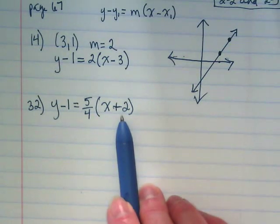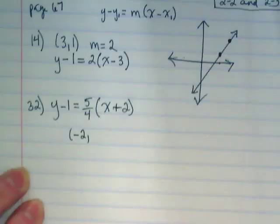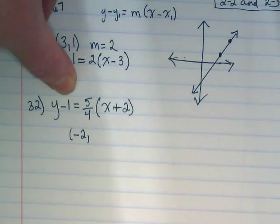And in the equation it's positive. So what does that mean about the x-y pair? It's going to be the opposite, so it's going to be a... So here's my x-y pair, negative 2. This is my y, and in the equation it's negative, so in the pair it's going to be... Positive.